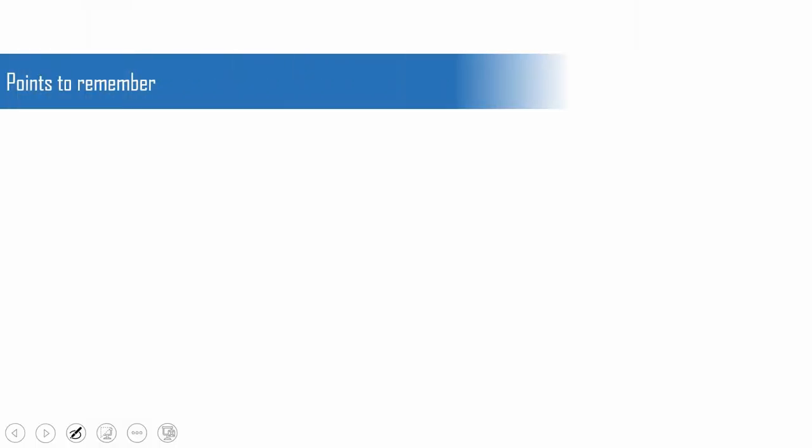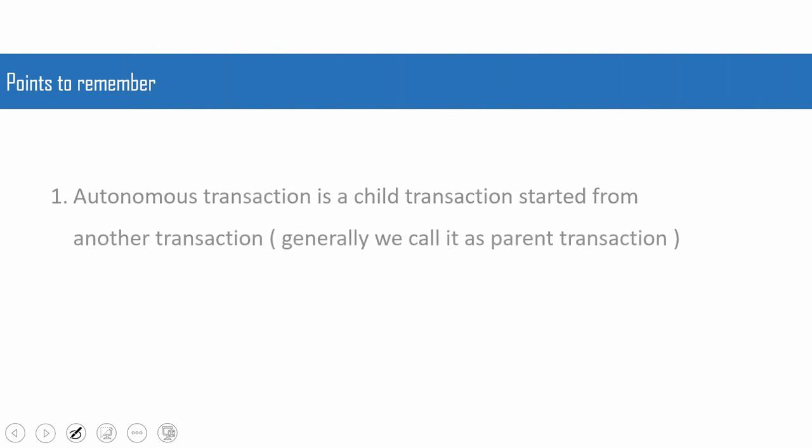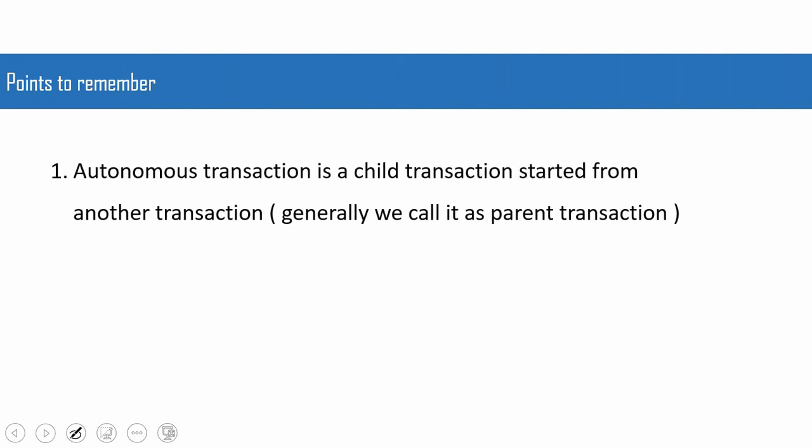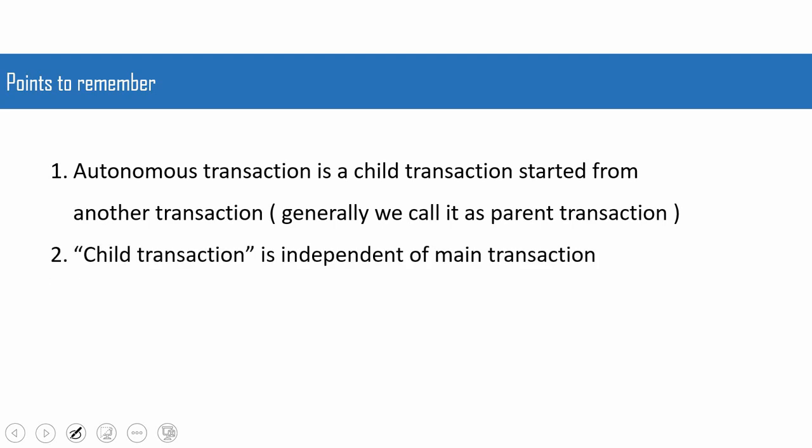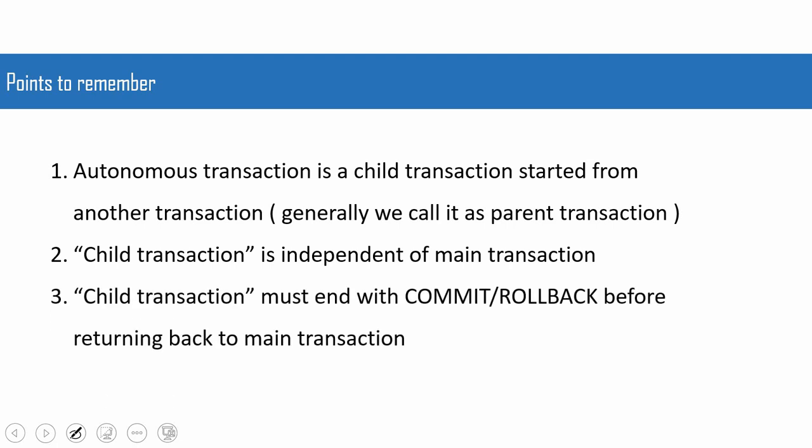Here are the key points to remember from an interview perspective. An autonomous transaction is a child transaction started from another transaction, which we call the parent transaction. The child transaction and parent transaction are completely independent of each other — it is a continuous, not a parallel, transaction. The child transaction is invoked from the parent, gets executed, and then control returns to the parent. Very importantly, the child transaction must end with a COMMIT or ROLLBACK before the control goes back to the main transaction.